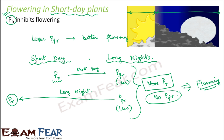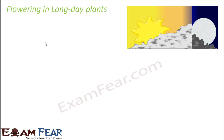What would happen if the days were longer? In that case, more Pfr would be formed. And if the nights were shorter, not all the Pfr would be able to convert back to Pr. You would be left with some Pfr remaining, which would inhibit flowering — so there would be no flowering. This explains why short day plants cannot flower under long-day conditions.